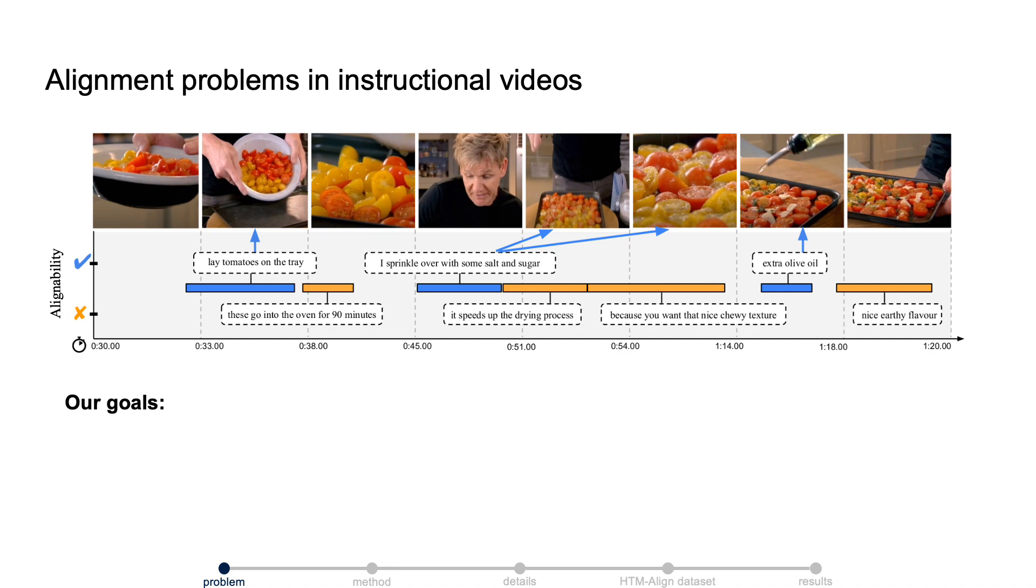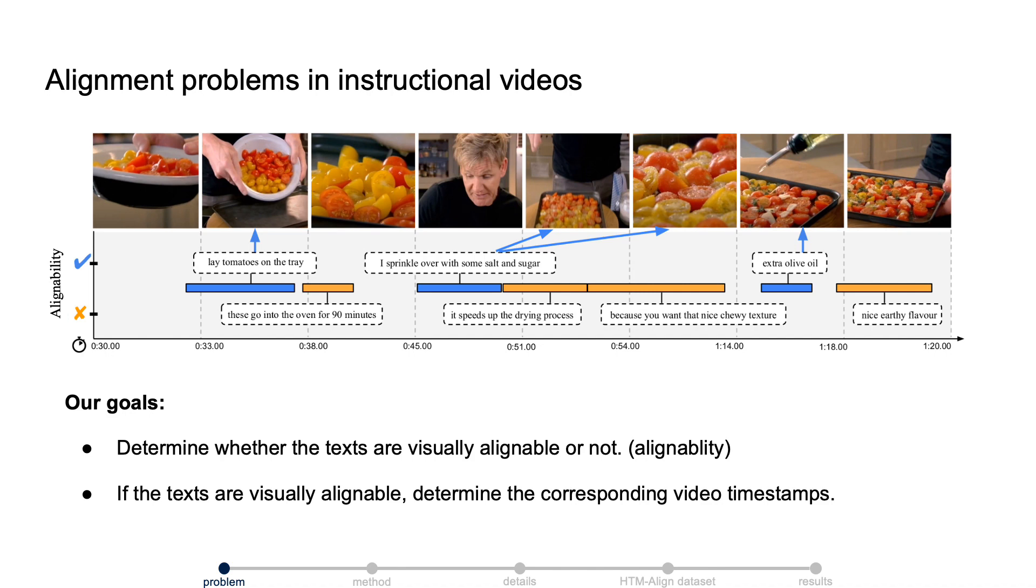Our goal in this paper is to create a model that can do two tasks. First, determine whether the texts are visually alignable or not. Second, if the texts are visually alignable, determine the corresponding video timestamps.